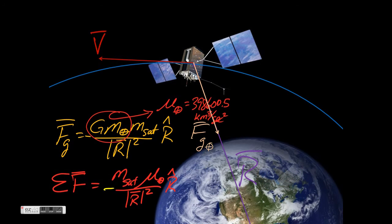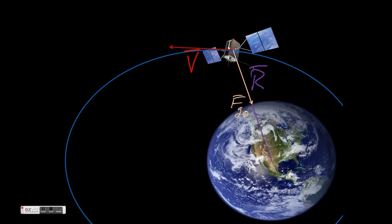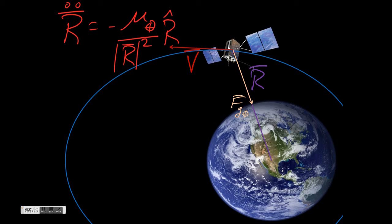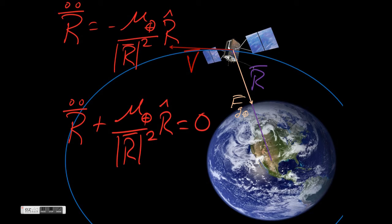Setting the gravitational force equal to mr̈, we can see that the mass of the satellite appears on both sides of the equation, so we divide those out. Moving everything to the left-hand side of the equation gives us the simplified two-body equation of motion for a satellite, based upon the assumptions that Earth's gravity is the only force acting on the satellite, the Earth is much bigger than the satellite, and that the Earth's gravity acts as if it emanates from a single point at the center of the Earth.